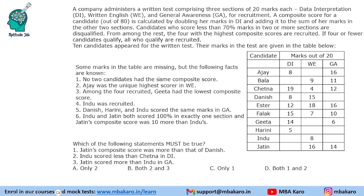This set from CAT 2018 slot 1 DILR says that a company conducts a written test comprising 3 sections of 20 marks each: data interpretation, written English, and general awareness. A composite score out of 80 is calculated by doubling the marks in DI and adding the other two sections as they are.